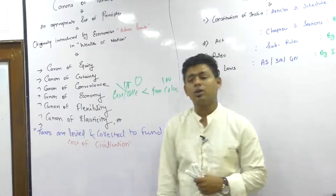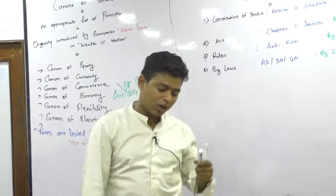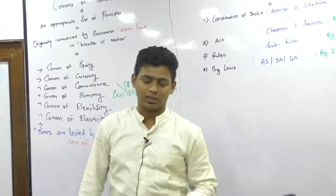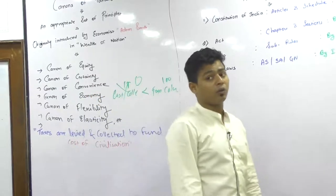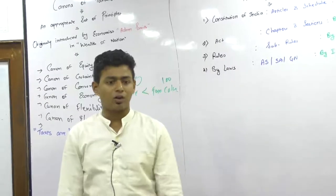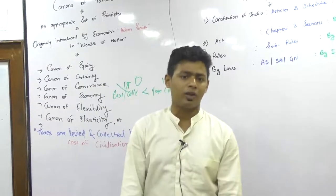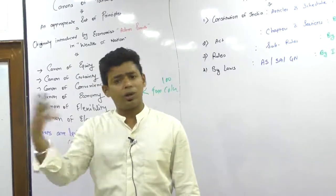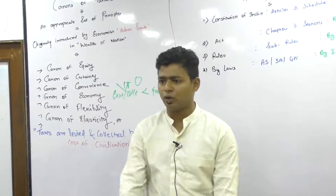Canon of productivity. Government cannot have unproductive acts - unproductive law means law which doesn't make any sense or doesn't contribute substantially to government revenue. That's why they abolished the Wealth Tax Act in 2014 - it was there but not followed seriously by people. Canon of productivity means government should generate enough revenue.